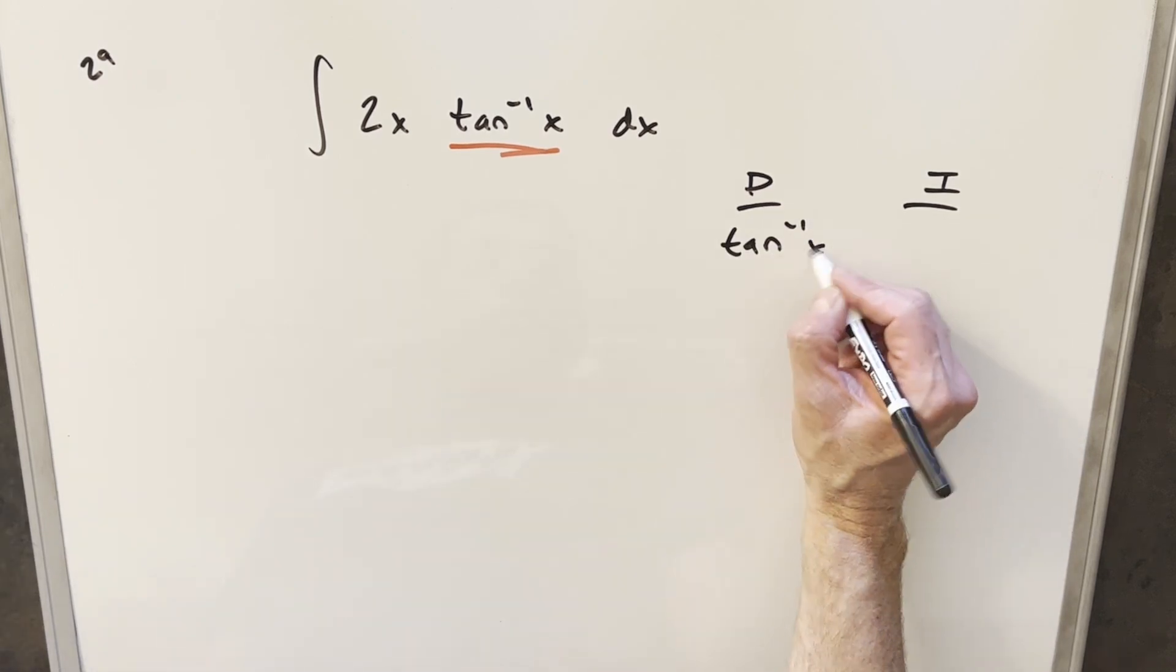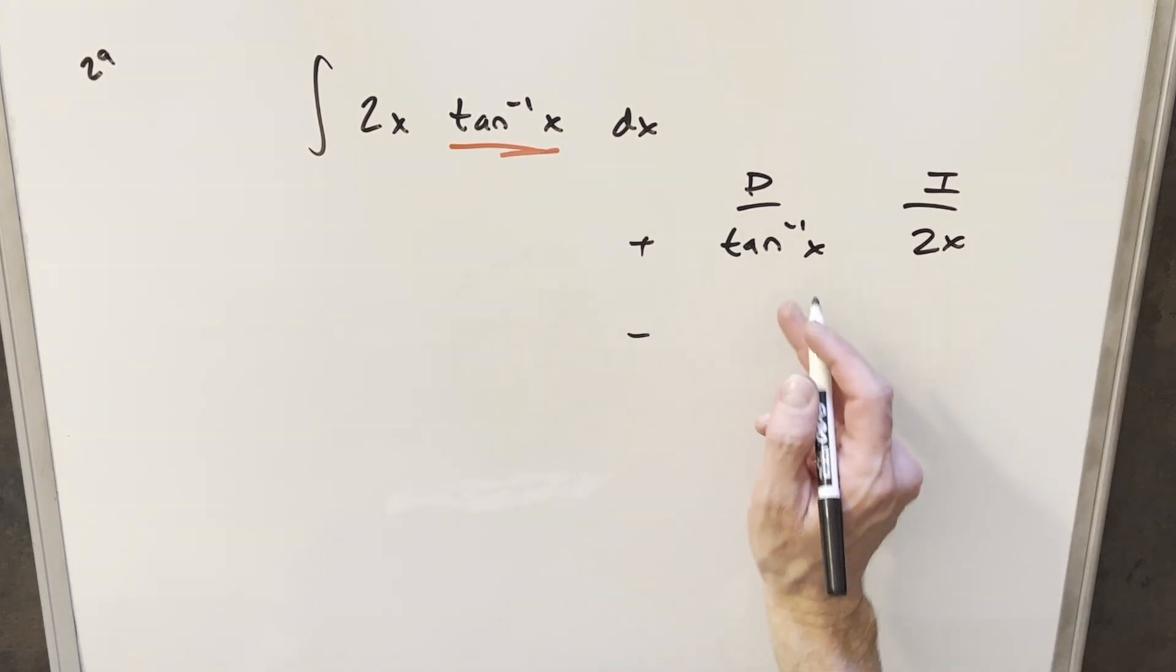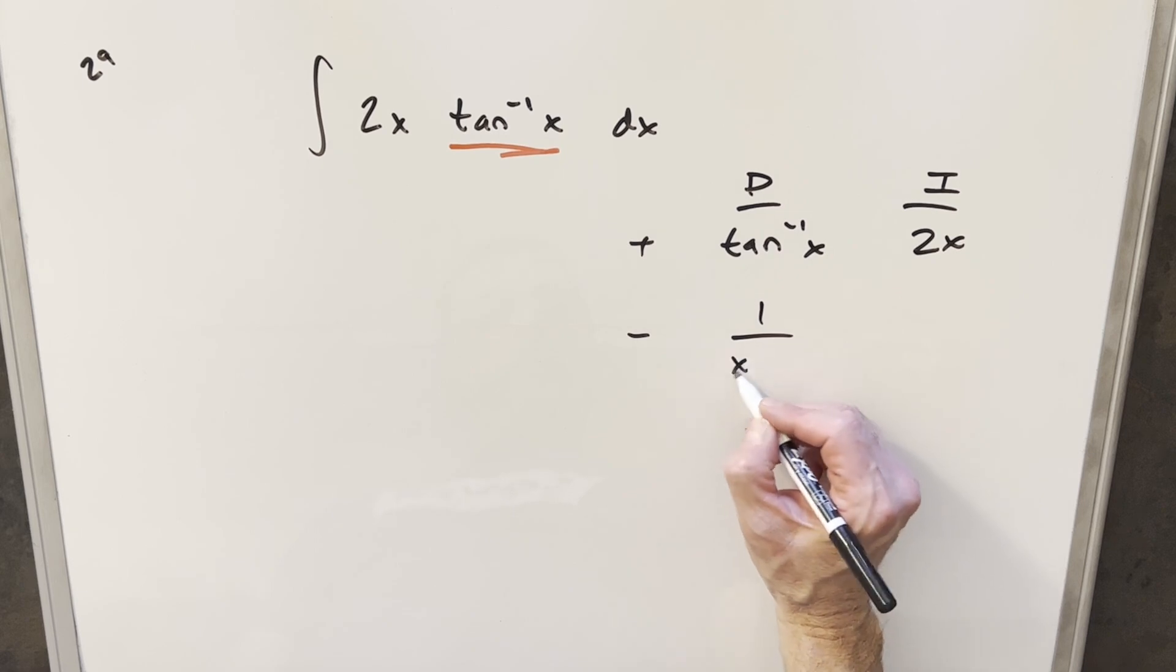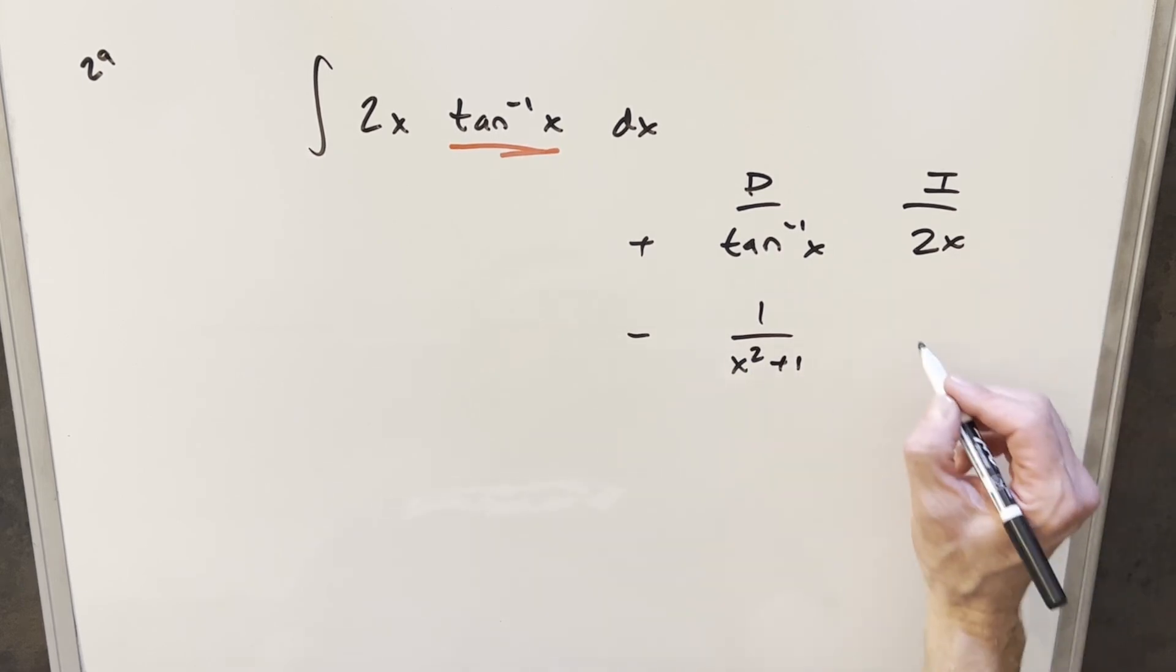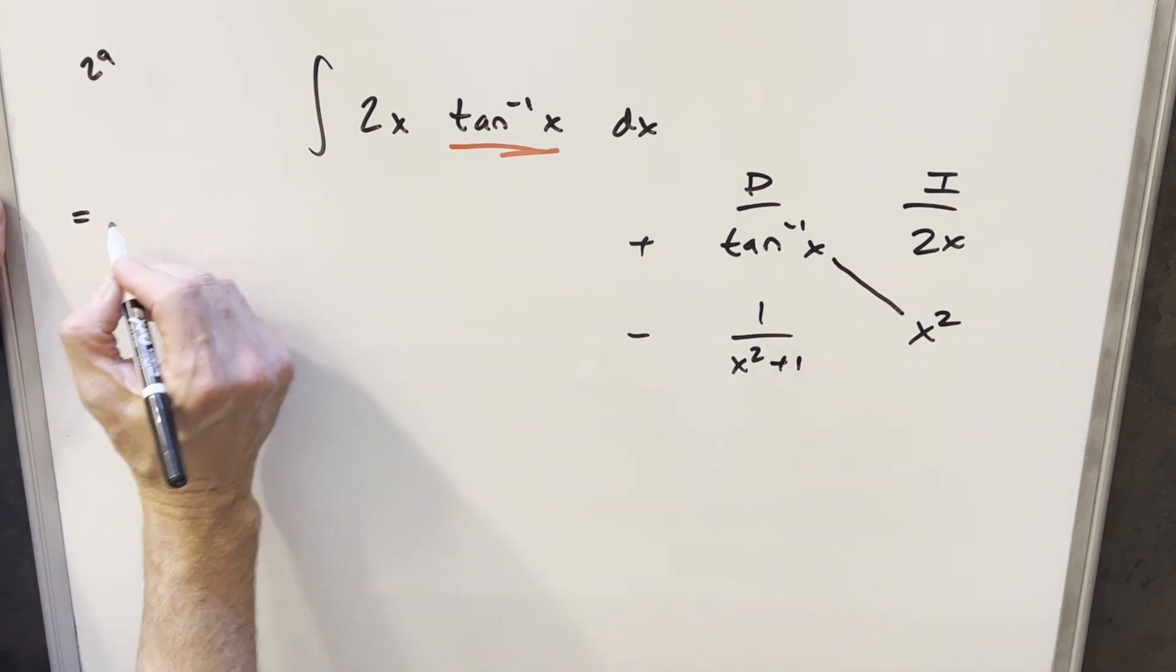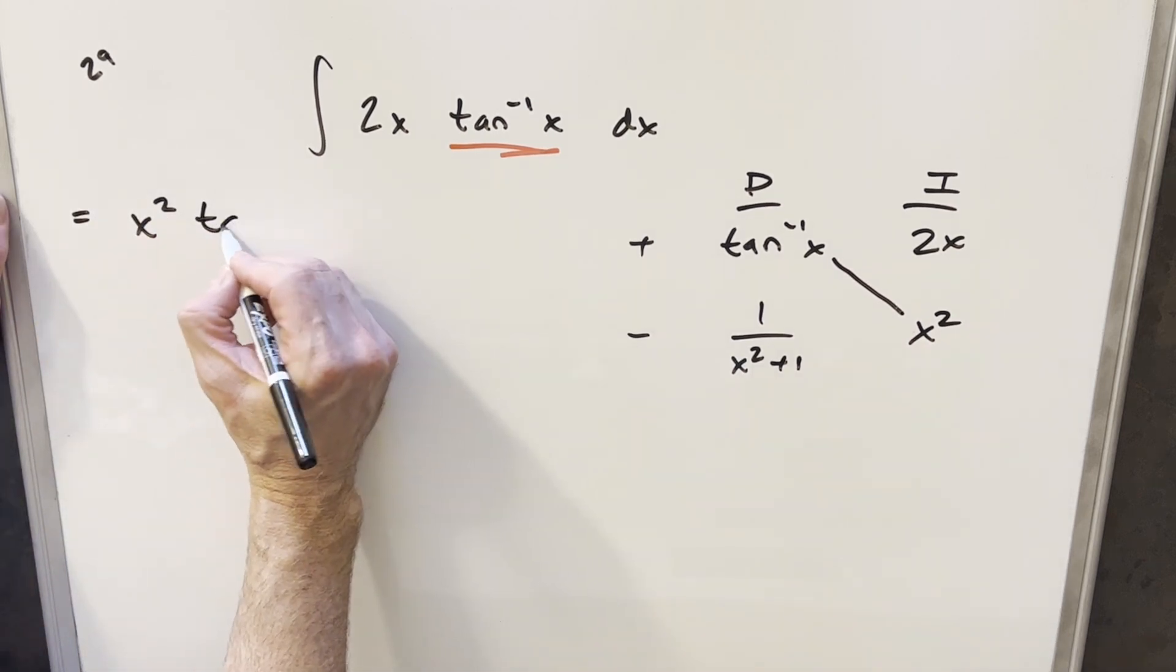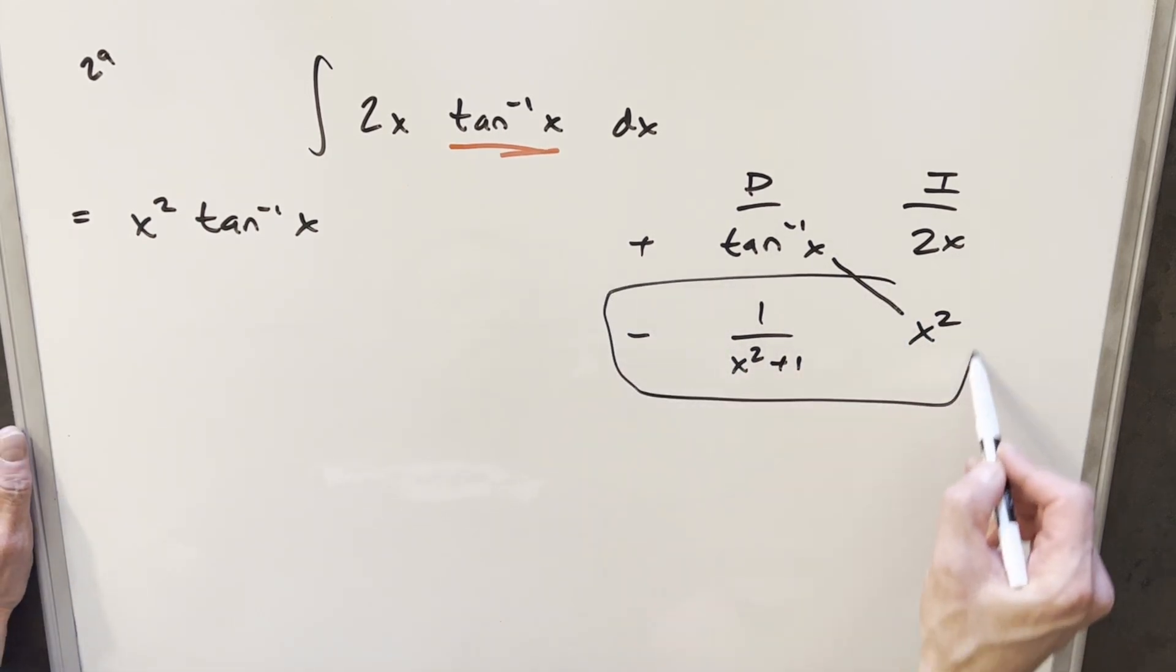So we'll just differentiate Arctan and we'll integrate 2x. And then the derivative of Arctan is just going to be 1 over x squared plus 1. Integral of 2x is going to be easy. Just with power rule, we end up getting x squared. And so we have here the beginning of our solution right here on the diagonal. So I'm just going to write that part down. We're going to have x squared Arctan of x.